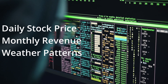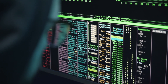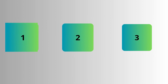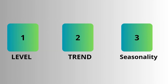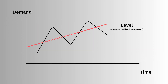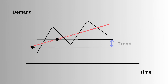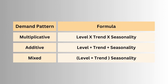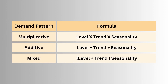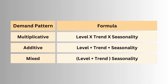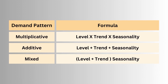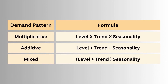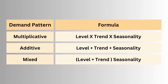It could be daily stock prices, monthly revenue, or even yearly weather patterns. Time series data typically consists of three main components: level, trend, and seasonality. Level is de-seasonalized demand. Trend represents the long-term movement, whether upward or downward. Seasonality captures regular patterns. Using these three, a demand pattern could be multiplicative (all three multiplied), additive (all three added), or mixed (sum of level and trend multiplied by the seasonality factor).